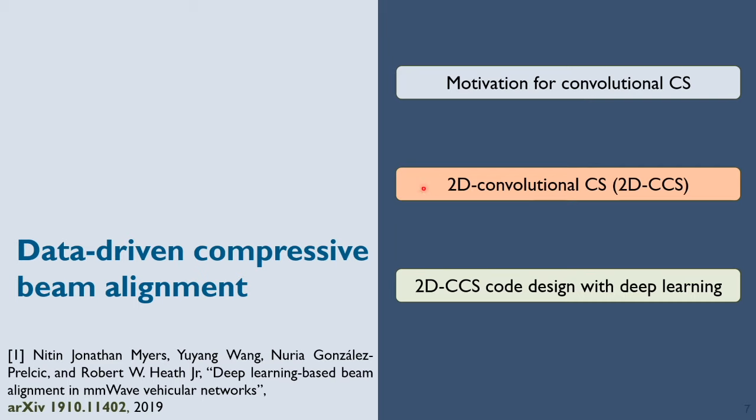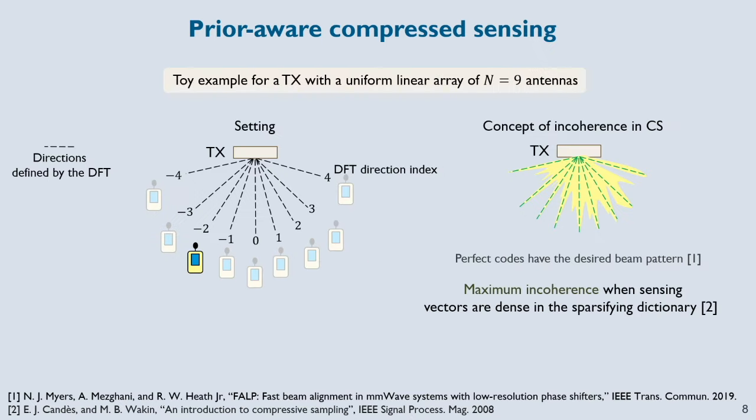Our approach is based on a special form of compressed sensing called convolutional compressed sensing. In this section, I am going to explain about 2D CCS and I will show you how the code in 2D CCS can be designed using deep learning.